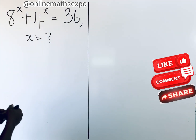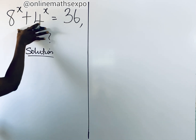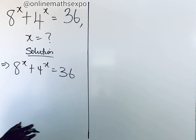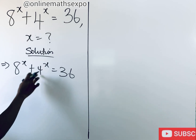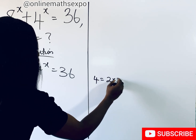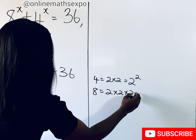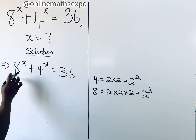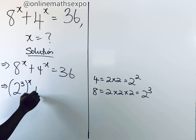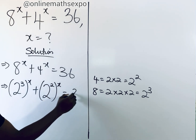To answer this question we begin with the solution. We observe that the bases can be expressed in multiples of 2. We know that 4 is 2 times 2, which is 2 to the power of 2, and 8 is 2 times 2 times 2, which is 2 to the power of 3. So we rewrite: 8^x becomes 2 to the power of 3 into x, and 4^x becomes 2 to the power of 2 into x, all equal to 36.